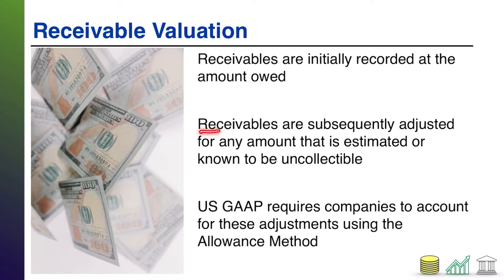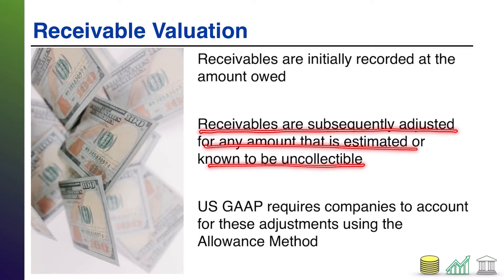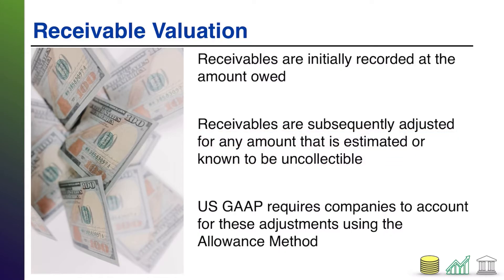However, subsequently, you are going to adjust your receivables for any amount that is estimated to be uncollectible or known for a fact to be uncollectible. So to the extent that you don't think your receivables will get paid, you must adjust the receivable on your balance sheet to reflect the amount you don't think you're going to get paid.